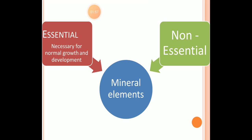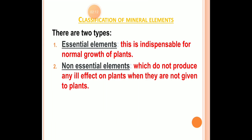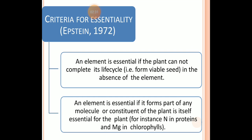There are mainly two types of nutrient elements: essential elements and non-essential elements. Both are required by the plant. Essential elements are required for the normal growth of the plant, while non-essential elements are required but in lesser quantity. The criteria for classifying an element as essential is that without it, the plant's life cycle cannot be completed.